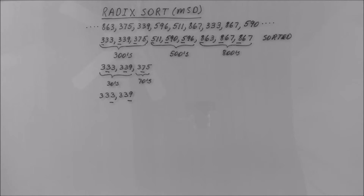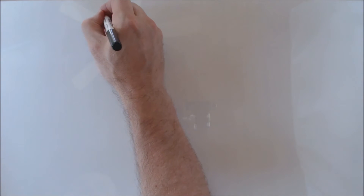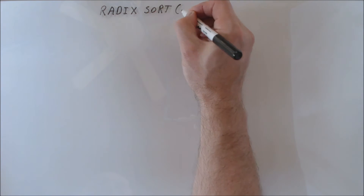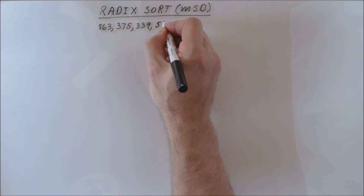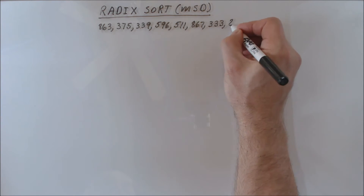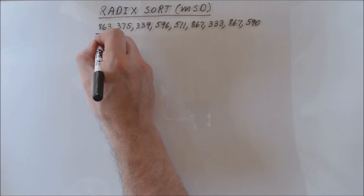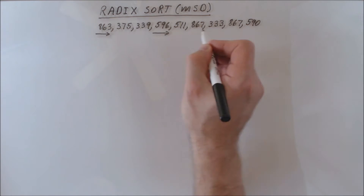Radix sort uses this pattern at the core of its strategy. It looks at individual digits of numbers. It can start with digits on the left side of each number and work from left to right one digit at a time. In our example, radix sort started by looking at the hundreds digit of each number, then proceeded to the tens and then to the ones digit. We use the same nine numbers as a quick example, but the algorithm works in the same way for millions or billions or trillions of numbers.